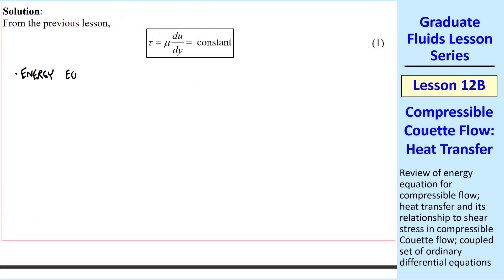Now let's add our energy equation. If you look back at some previous lessons, we derived several different forms of the energy equation. The one that we'll use here is a very general one. Rho dh dt equal dp dt minus del qi del xi plus phi. I'll call this equation 2.